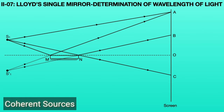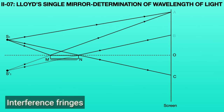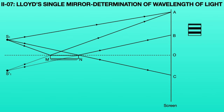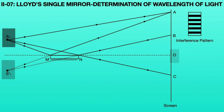Due to these coherent sources, on the screen in the range AB, we get interference fringes. Fringes do not appear on the entire screen — only in the limited range AB. At point O, fringes are not formed because light rays coming from S1 only meet at O, while light rays from virtual source S1 dash do not meet there. Hence, there is no superposition of the two coherent sources at point O, and we cannot get fringes at point O on the screen.